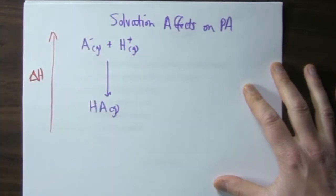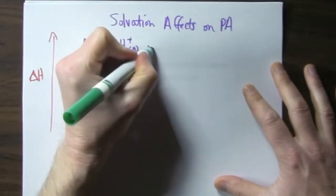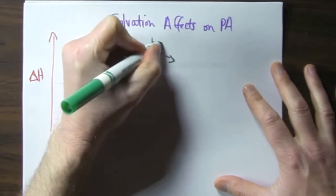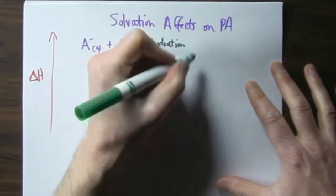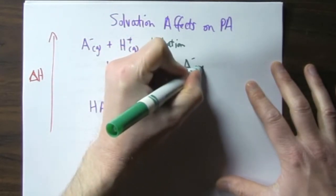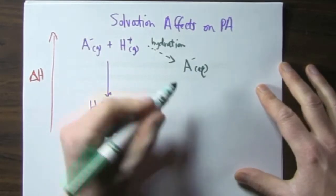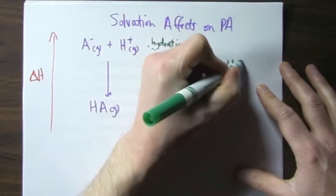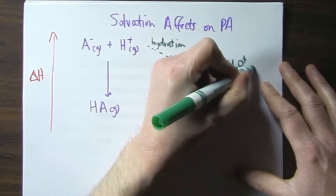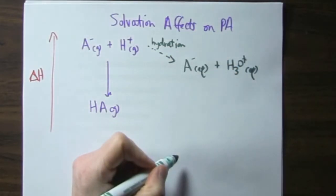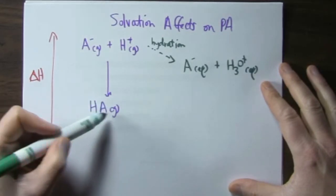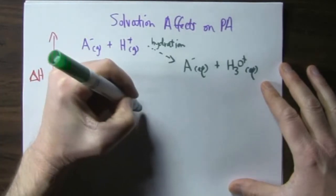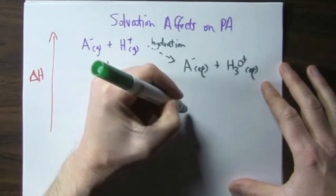As I said, proton affinity is usually exothermic. So we're going to lose some energy upon hydration or solvation with water. Because we're going to make the ion more stable because it's surrounded by water molecules. And we're going to make the proton more stable as it forms a hydronium surrounded by water molecules. But the neutral species, HA,